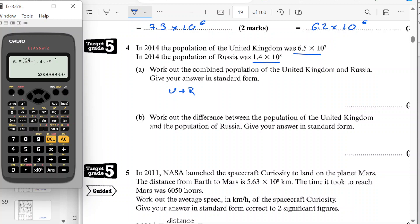So 6.5 times by 10 to the power 7, plus 1.4 times by 10 to the power 8. So that's going to give me this value. Write your answer in standard form. So I'm going to write that as 2.05 times by 10 to the, and I've moved that 8 places.